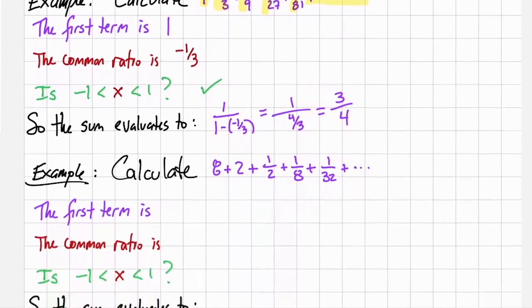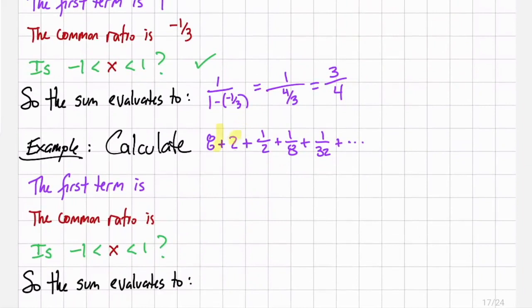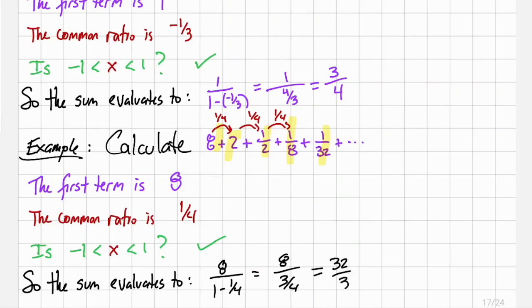And another example, let's calculate 8 + 2 + a half + an eighth + one thirty-second. Here we see we're multiplying by a quarter each time. The first term is 8. The common ratio is that quarter. One quarter does lie strictly between negative 1 and 1. And applying the formula gives us 8 over 1 minus a quarter, which simplifies to 8 over three quarters, which is thirty-two thirds. That's about 10.666.